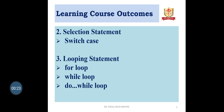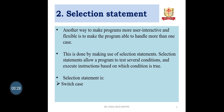The learning course outcomes are Selection Statements and Looping Statements. Selection Statements provide another way to make a program more user-interactive and flexible, by enabling the program to handle more than one case. This is done by making use of Selection Statements, which allow a program to test several conditions and execute instructions based on which condition is true. The Selection Statement covered here is the switch case.